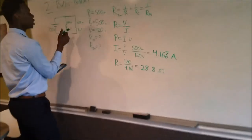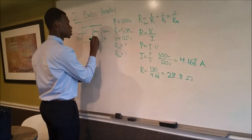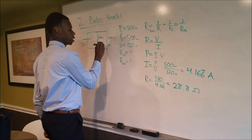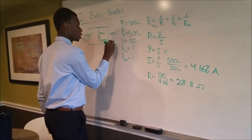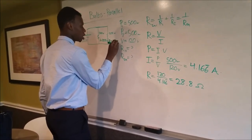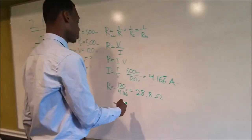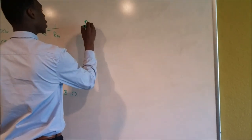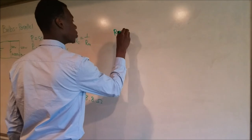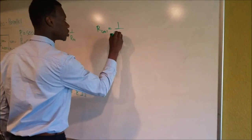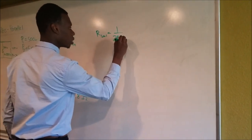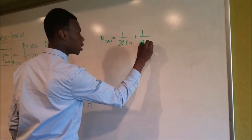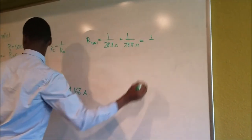Then once you come back over here, now we know our resistance for each bulb, which is 28.8 ohms. So, once we have our resistance for each bulb, 28.8 ohms and 28.8 ohms, then we can come over and solve for our total resistance, which is going to be 1 over 28.8 ohms plus 1 over 28.8 ohms equals 1 over R equivalent.